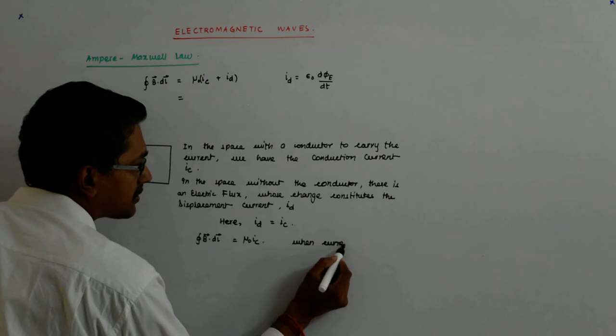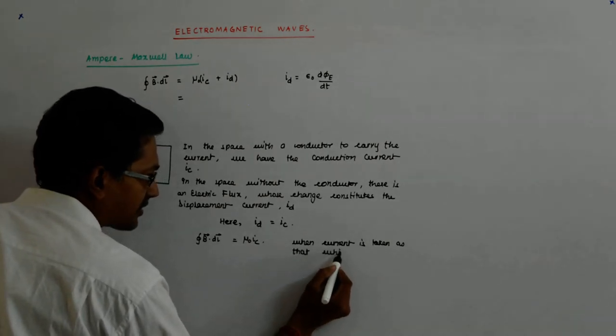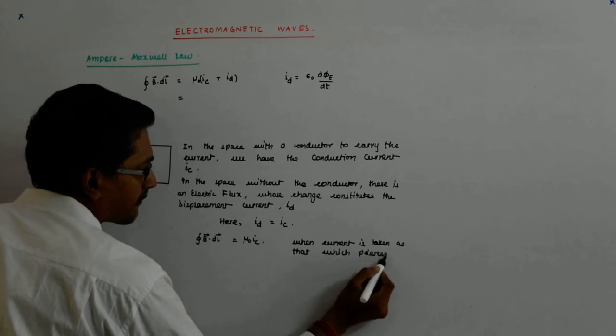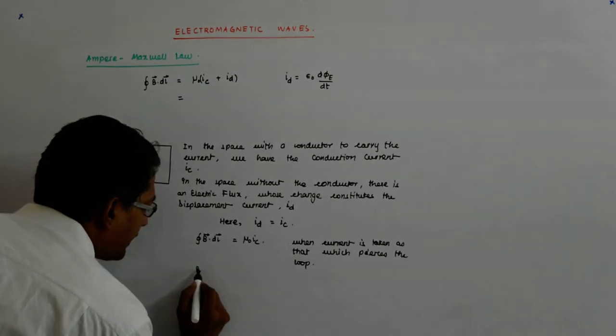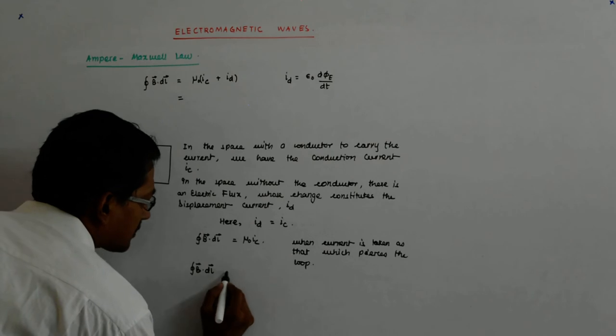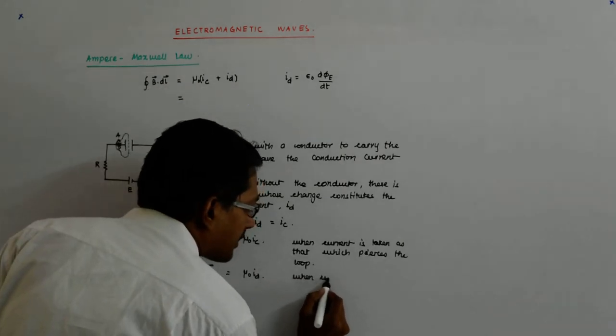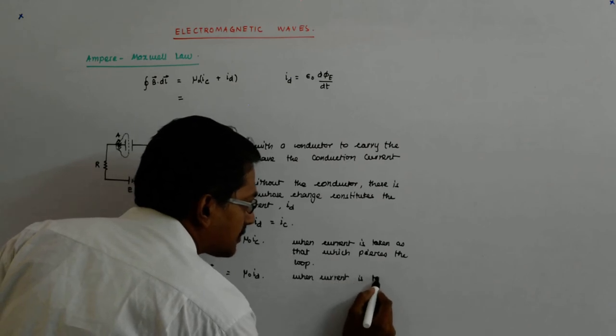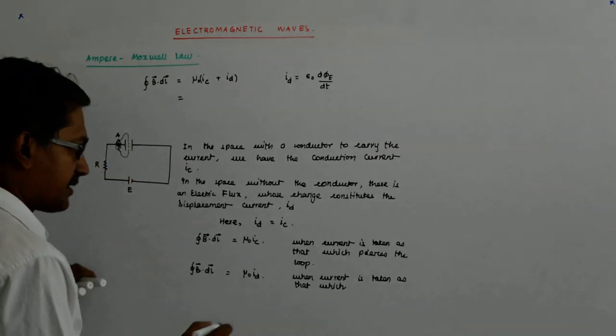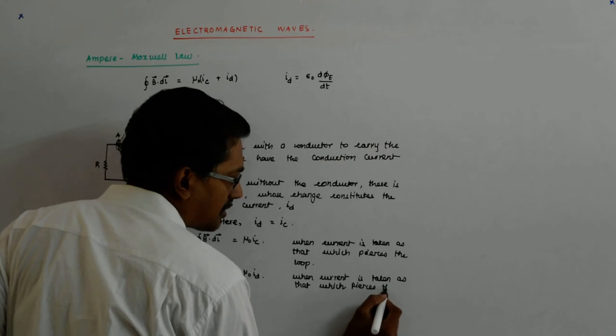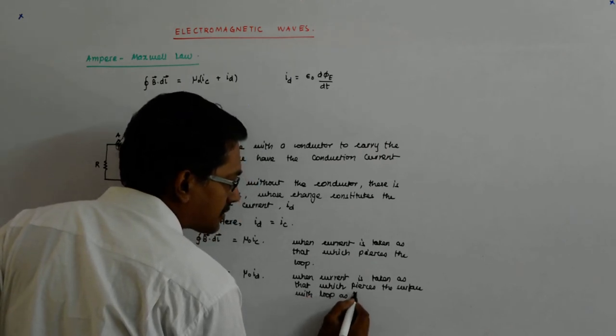When current is taken as that which pierces the loop, and B dot DL is equal to mu 0 ID, when current is taken as that which pierces the surface with loop as the rim.